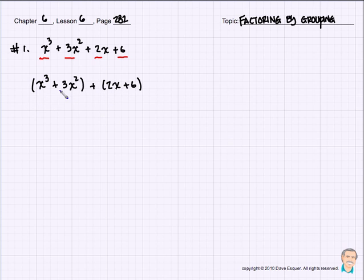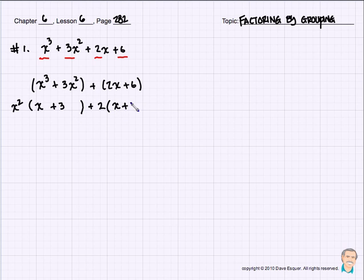If we stare at x cubed plus 3x squared, we can see that we can factor out an x squared from those two, which leaves us with an x plus 3. If we look at the second terms here, we have a 2 we can factor out, which leaves us with an x plus 3. And lo and behold, we can remove the x plus 3 as the factor.